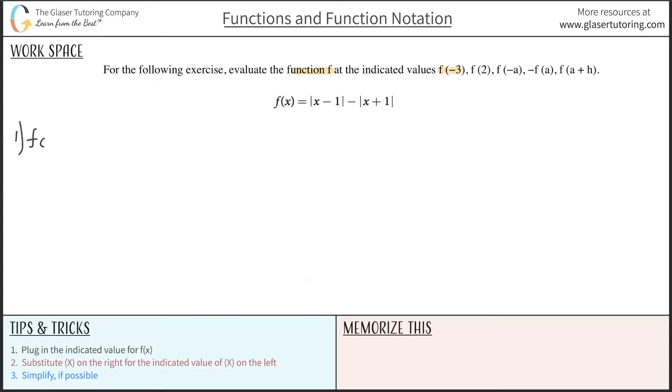That's going to be the first step. Before I even do that, I'm just going to rewrite the equation. So f of x is equal to absolute value of x minus 1 minus absolute value of x plus 1. So first thing is instead of f of x, now I'm going to write f of negative 3. That's the first step.